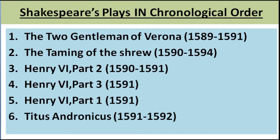The very first well-recognized play is The Two Gentlemen of Verona, written in the time span of 1589 to 1591. Second, The Taming of the Shrew, time span 1590 to 1594. Third, Henry VI Part 2, 1590 to 1591. Fourth, Henry VI Part 3, 1591. Fifth, Henry VI Part 1, 1591. And the sixth one is Titus Andronicus, time span 1591 to 1592.